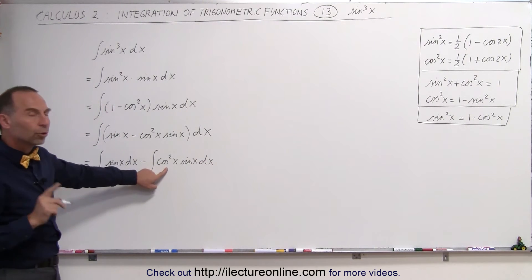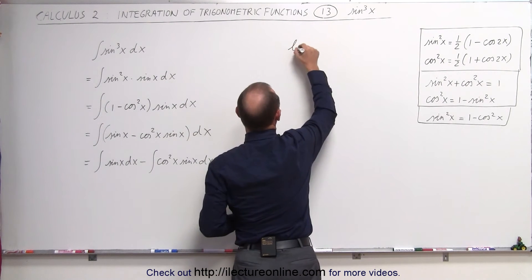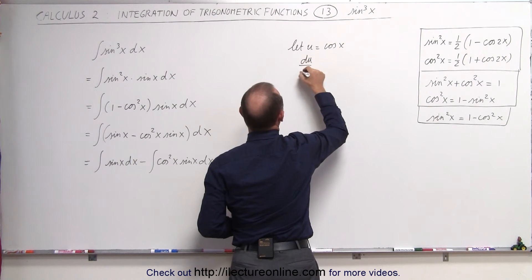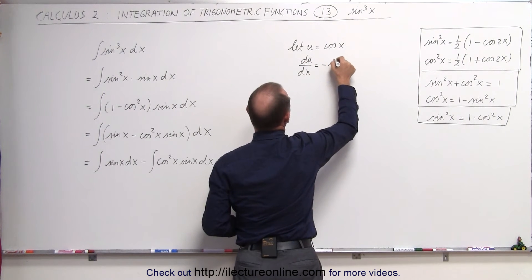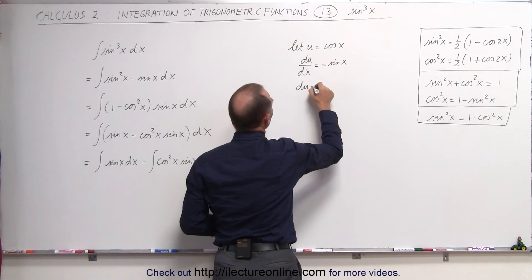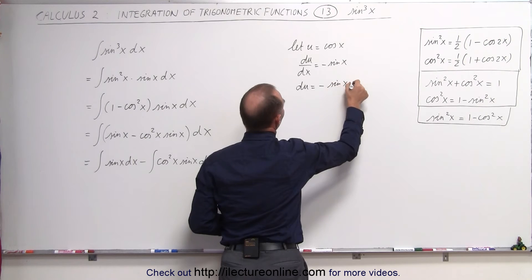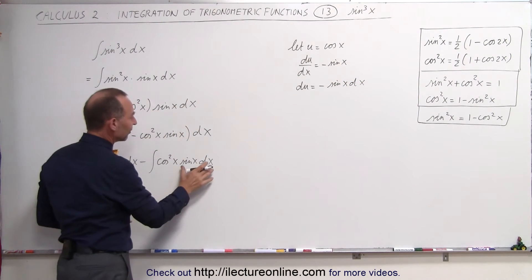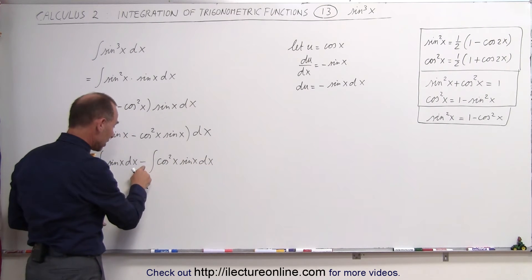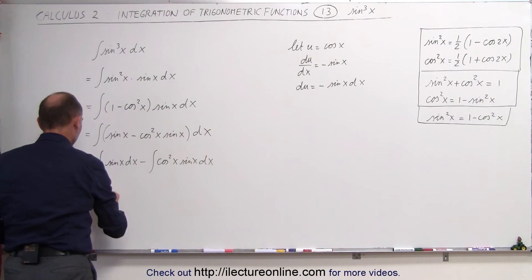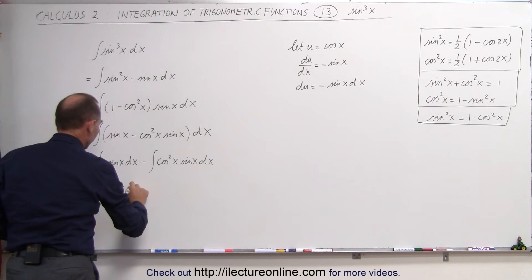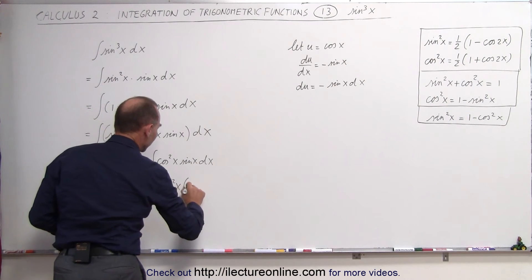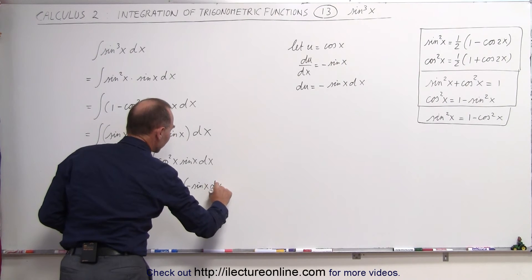Now we let u equal cosine of x. Then du/dx equals minus sine of x, so du equals minus sine of x dx. We need a minus sine of x dx, and we have a sine of x dx here, so we rewrite this as the integral of sine of x dx plus the integral of cosine squared of x times minus sine of x dx.